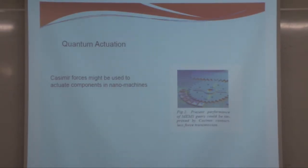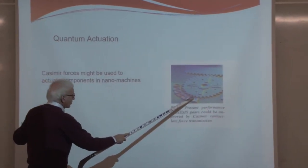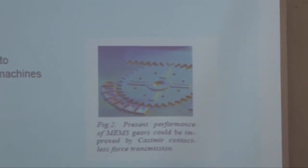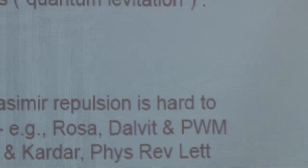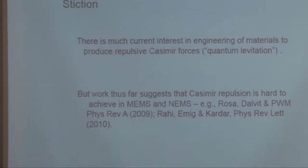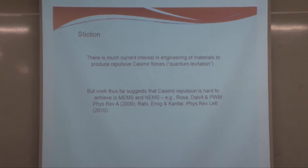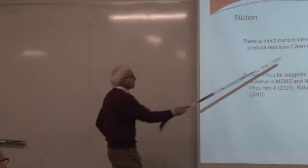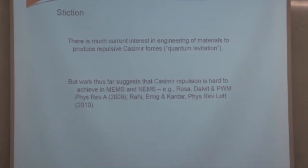People are interested because of basic physics, but also for possible applications in nanotechnology — so-called quantum actuation, using the Casimir force to move gears in micromachines. However, most interest is on the negative side: if you make machines small enough, attractive Casimir forces may be very deleterious to devices. There's much current interest in engineering materials to produce repulsive Casimir forces.